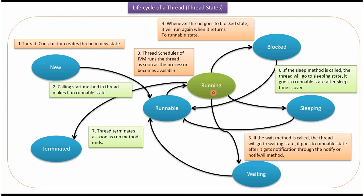From running state, the thread can go to blocked state. From blocked state, the thread can go back to runnable state. When the thread is running, if the sleep method is called, then the thread will go to sleeping state. Once the sleeping time is over, the thread will go from sleeping state to runnable state.